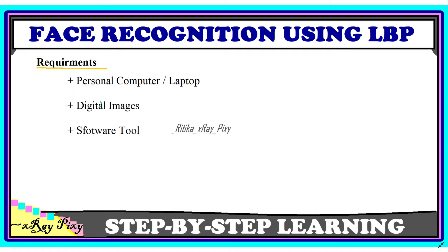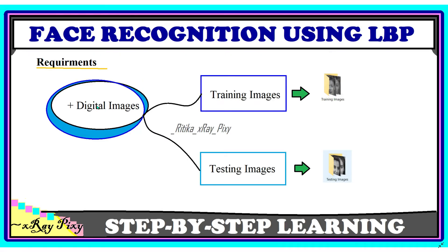The requirements include a well-maintained personal computer or laptop, digital images for testing and training, and any software tool for implementation. The digital images are divided into two datasets: one for training images and one for testing images, with separate folders created for each. All training images go in the training folder, and the image we are searching for goes in the testing folder.